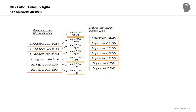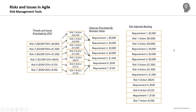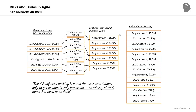Now we have 7 risks and 7 features on the product backlog. Each risk has a response plan — an action needed to deal with that risk, for example costing around $1,500. It's time to prioritize the requirements with the risks to produce a risk-adjusted backlog showing both business features and risk action plans prioritized together. The risk-adjusted backlog is the most commonly used tool for dealing with threats in agile projects.